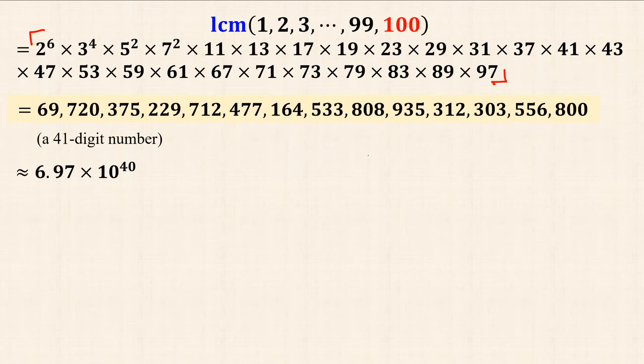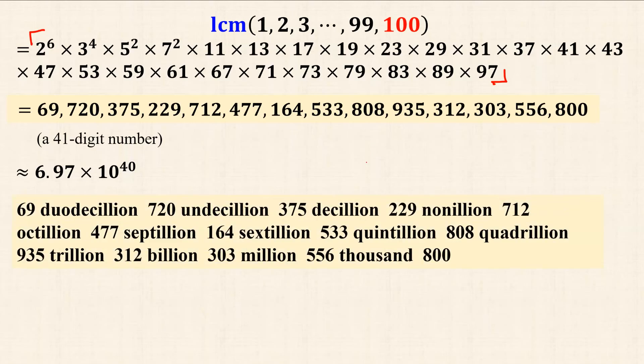This number is also read 69 duodecillion, 720 undecillion, 375 decillion, 229 nonillion, 712 octillion, 477 septillion, 164 sextillion, 533 quintillion, 808 quadrillion, 935 trillion, 312 billion, 303 million, 556,800.